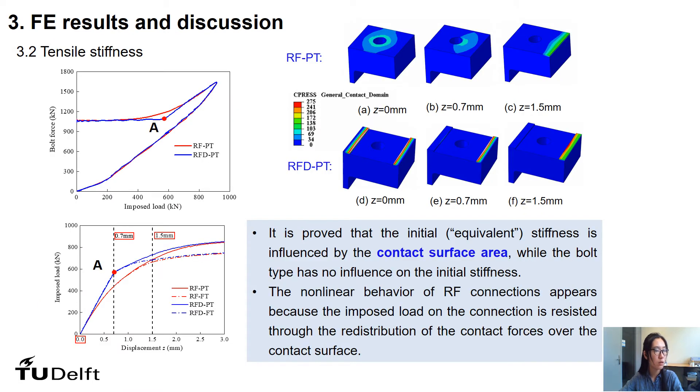Except for the failure modes, the tensile stiffness is quite important as the stiffness of the connection joint has significant influence on the fatigue endurance and integrity of the entire structure. As shown in the load displacement curve, initial stiffness is only influenced by the contact surface area. According to the stress redistribution of the contact pressure of RFPT and RFDPT cases, it can be concluded that the non-linear behavior of RF connection appears because the imposed load on the connection is resisted through the redistribution of the contact forces. On the contrary, the increment of the bolt force of RFDPT connection can be neglected before reaching the critical point, whereas the applied force is transferred well to defined contact surface instead of a continuous surface.